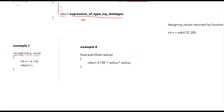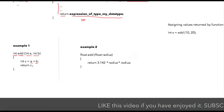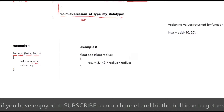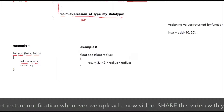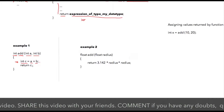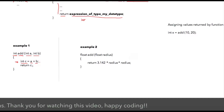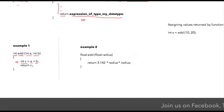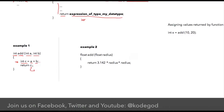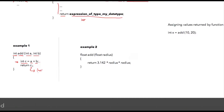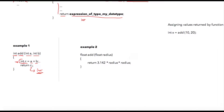Inside of this function I am performing my operations — I'm adding the two passed values 'a' and 'b' and storing the addition into a new variable 'c'. So in this statement I am declaring a variable 'c' and initializing it with the addition of 'a' and 'b', and in the next statement I'm returning 'c'. Notice that 'c' is of type integer, so this value will be returned by this function whenever it is called.